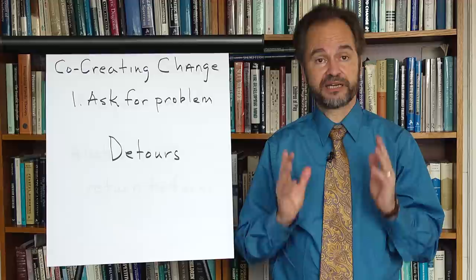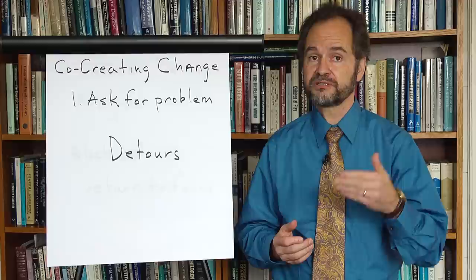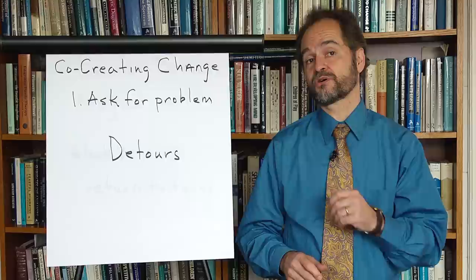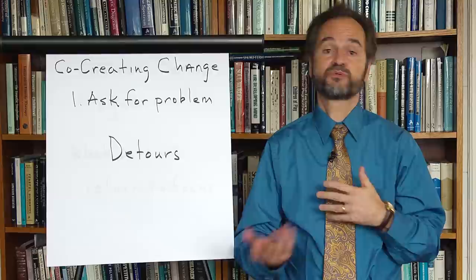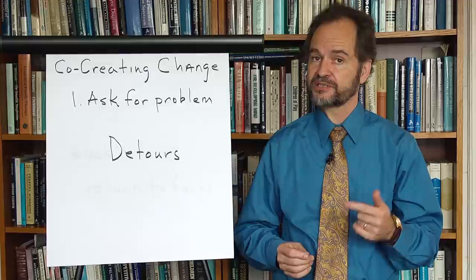And to co-create that relationship for change, we need certain specific ingredients. If we don't have them, change doesn't happen. So the first ingredient we need is this: We need to know what internal emotional problem the patient wants to solve. His problem is what motivates him to seek therapy. If we find out what his problem is and we can show him how the therapy will solve his problem, he'll be motivated to join us in the therapeutic task.